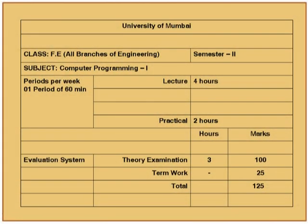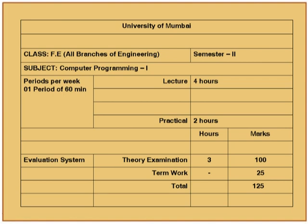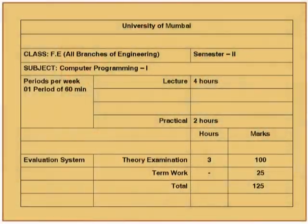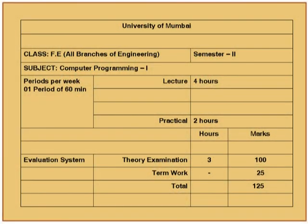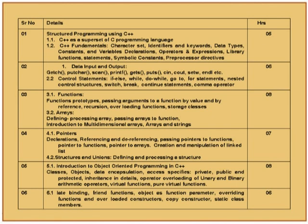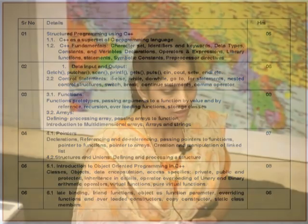The syllabus is given by the university and sent to all the colleges. It is for all branches. The number of lectures per semester is three hours per week. In the university we have semester one and semester two, called CP1 and CP2 — Computer Programming Language one and two. In the first semester we have C and C++, and in the second semester we have Java. The first semester has only three hours given for C and C++.